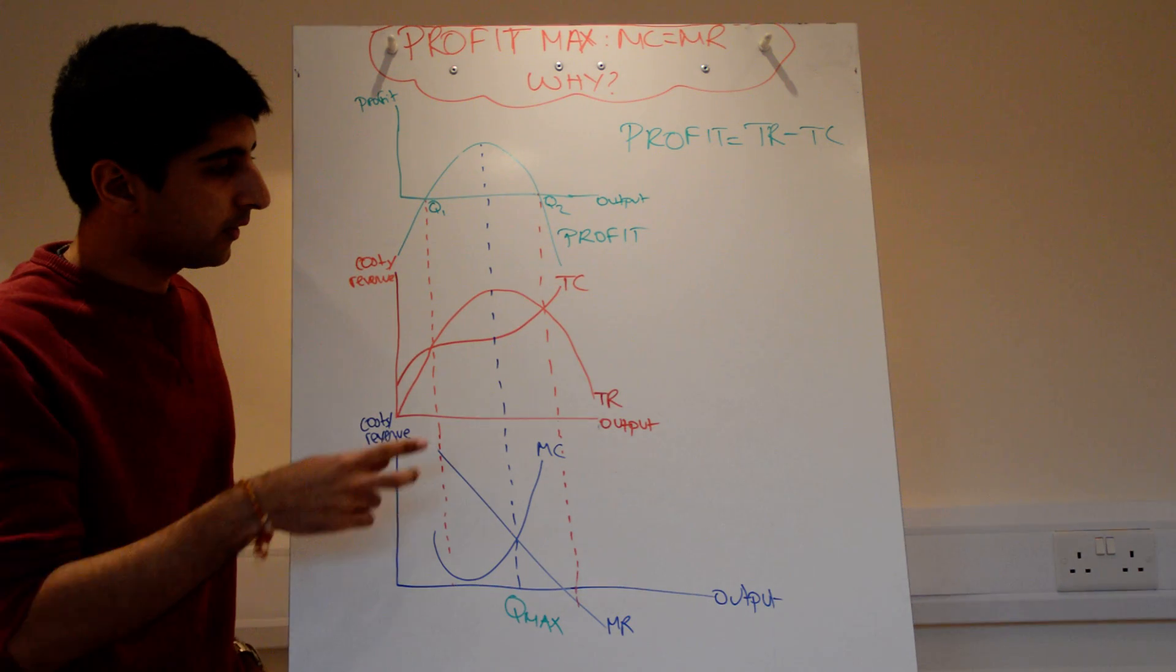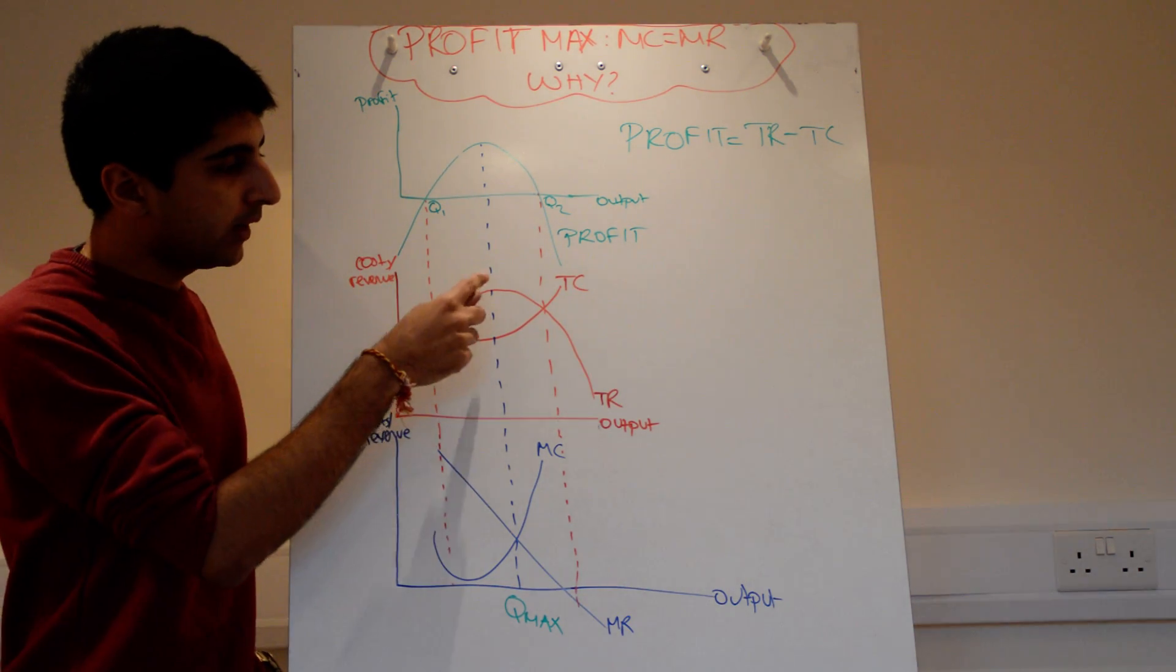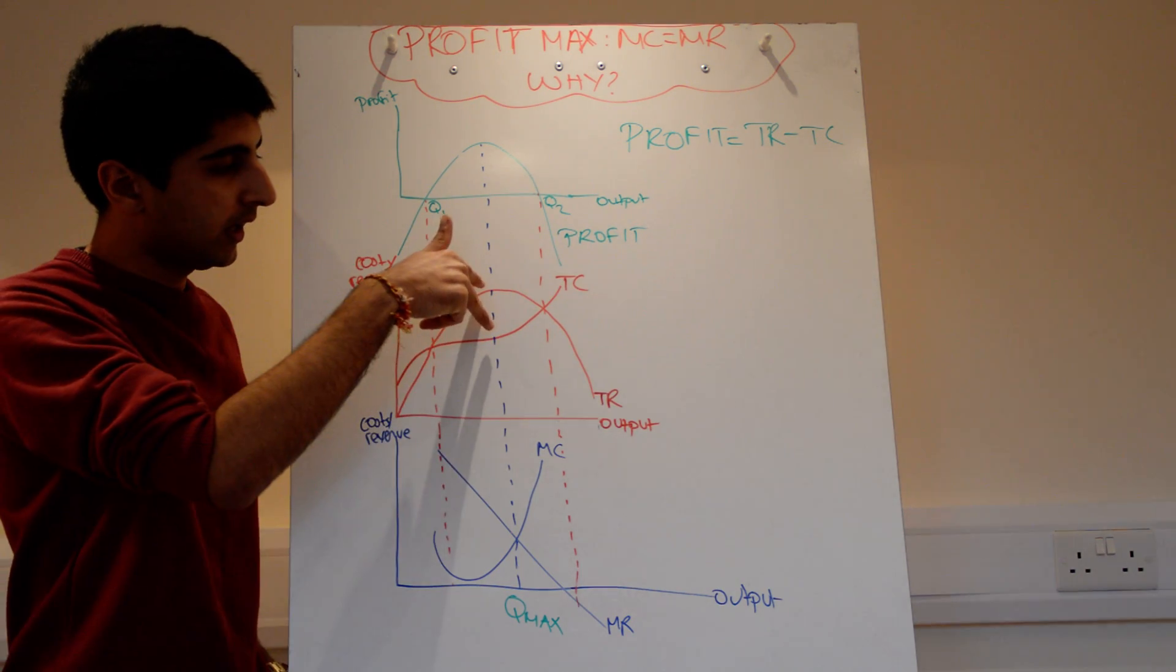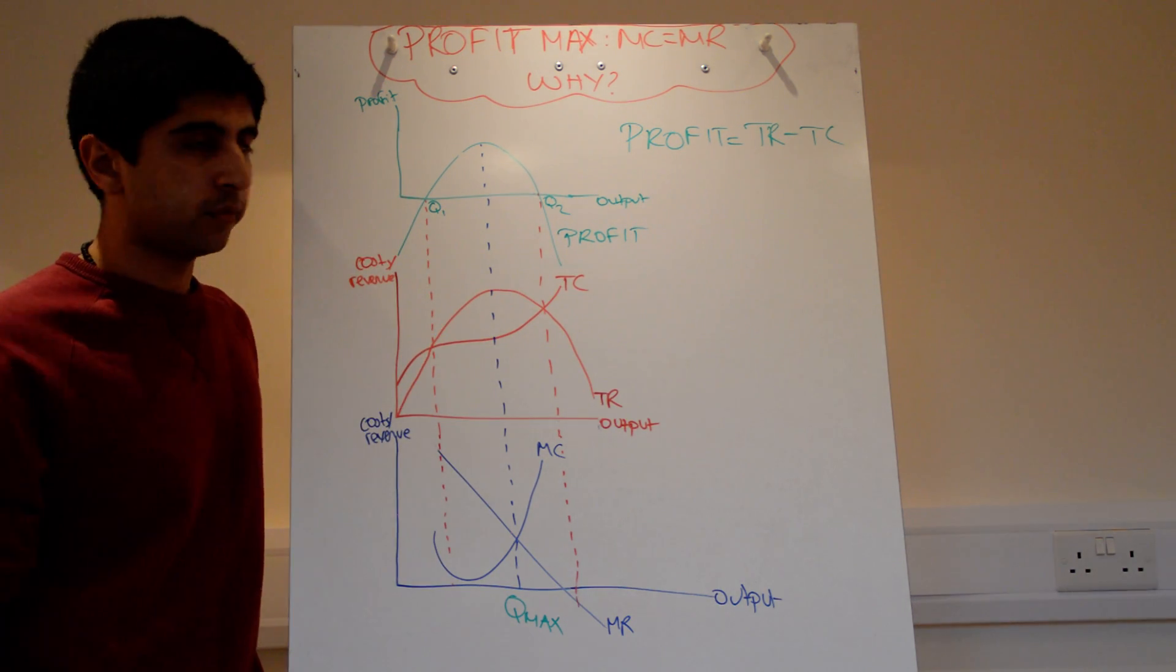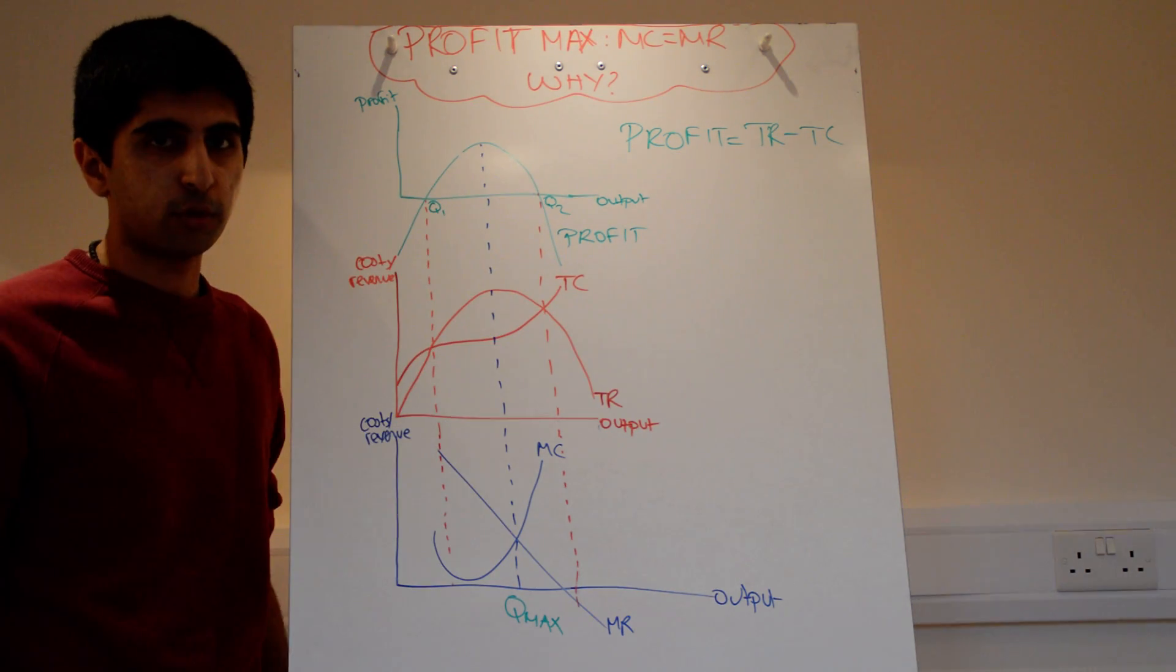When we maximize profits, it's when the distance between the two is greatest. Okay, so the greatest distance, when TR is greater than TC, okay, that's going to be your maximum profit being made. And that corresponds to the highest point on the profit curve.